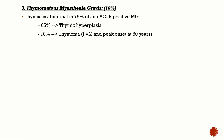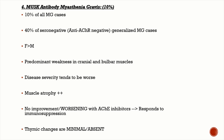Thymomatous myasthenia gravis is seen in 10% of patients. The thymus is abnormal in 75% of seropositive MG — an important MCQ point. Of that 75%, 65% have thymic hyperplasia and 10% have thymoma. Thymoma incidence has equal sex distribution and peak onset around 50 years of age.